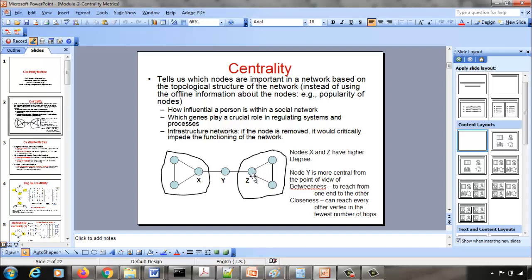So X and Z may be more important from a degree point of view, whereas Y, even though it has a fewer degree, has a high betweenness. So we're going to look at five centrality metrics in this module, and they'll be used in the other modules in this course too.